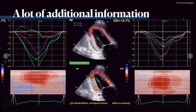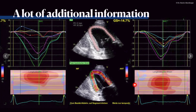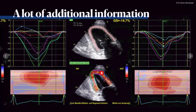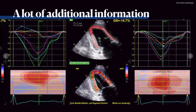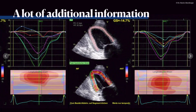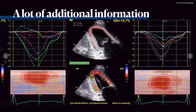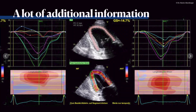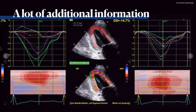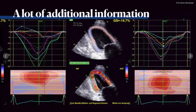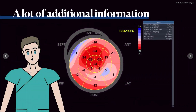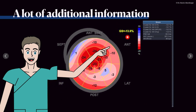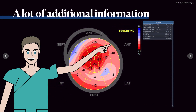In the strain M-mode, the color code in the center represents the apical regions — red here means normal contraction, so a normal negative value and normal strain. Overall this was in the range of minus 12 to minus 15 percent. Looking at the global longitudinal strain on the bullseye plot, the global strain was minus 13.9 percent.